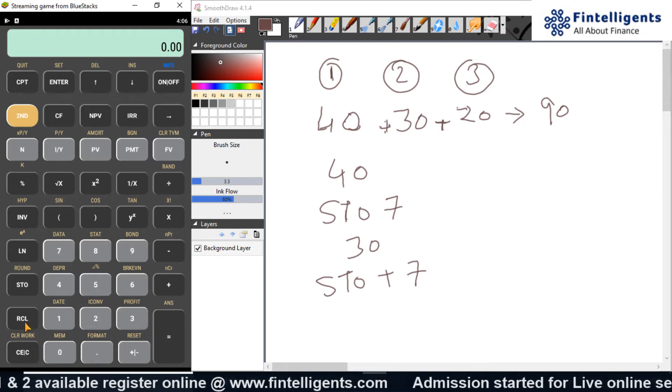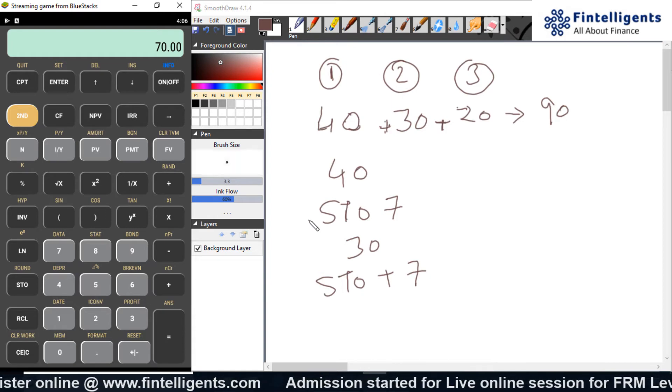Let us quickly check what is now saved in number 7. It is 70. That is 40 plus 30. Now, the third calculation 20.